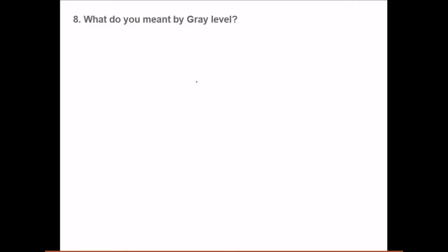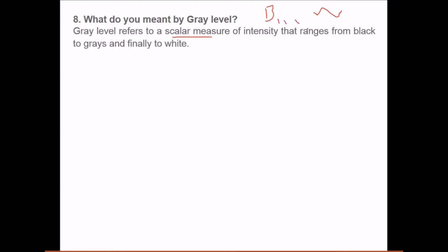What do you mean by gray level? Gray level refers to the scalar measure of intensity that ranges from black to grays and finally to white. So black to white it goes and there are shades of gray. These are scalar measure of the intensity which goes from black to white.